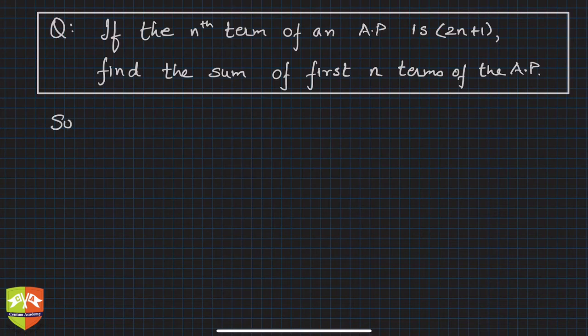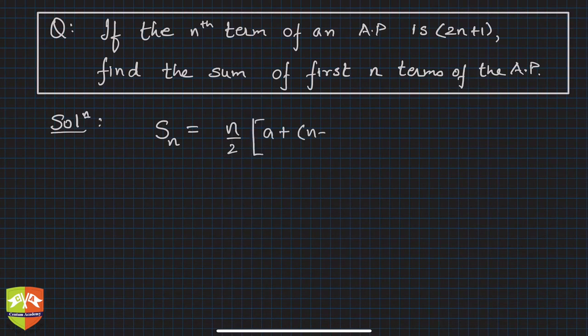Let's solve this. If you see, this is a mix of our previous knowledge on nth term and the knowledge on sum of n terms of an AP. So let's write out the formula for sum of n terms of an AP. It's n by 2 times [a plus (n minus 1)d], where a is the first term and d is common difference.